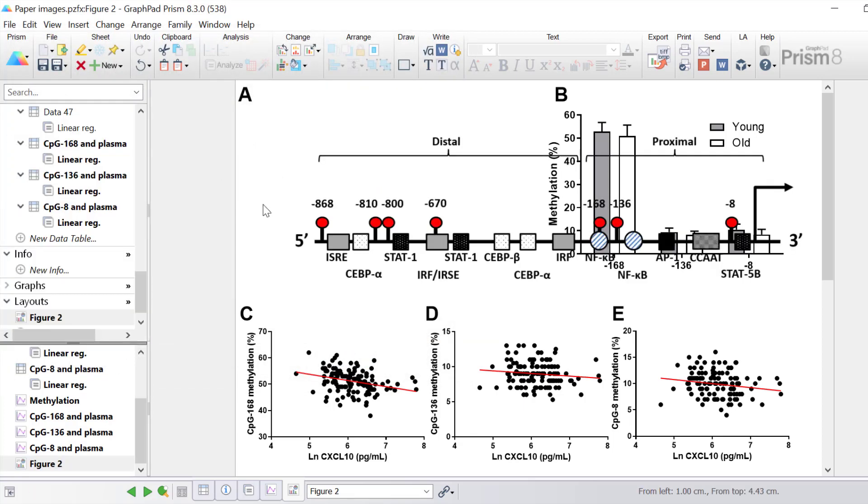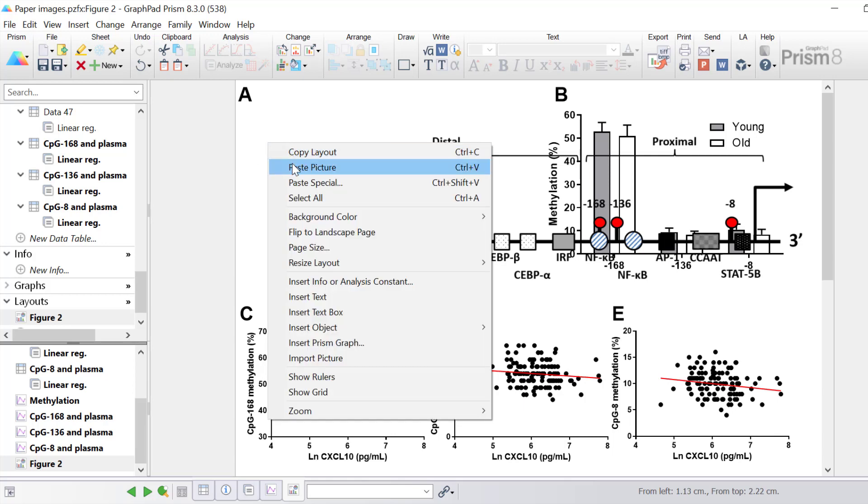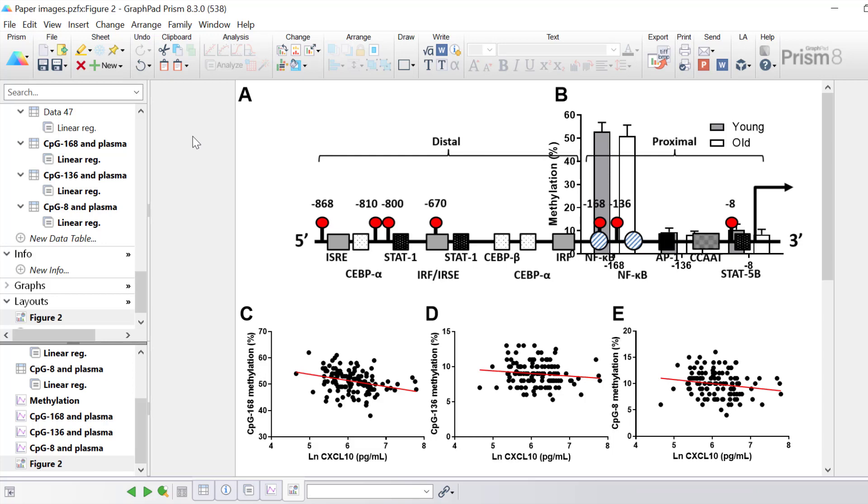It is also worth mentioning that there is another way that you can insert a picture into Prism and that is to use the copy and paste function. For example say you had an image open in another program such as Microsoft Word or PowerPoint. You can right click and copy that image within the program and then within Prism you simply right click and then select paste picture. This will paste the picture into Prism.